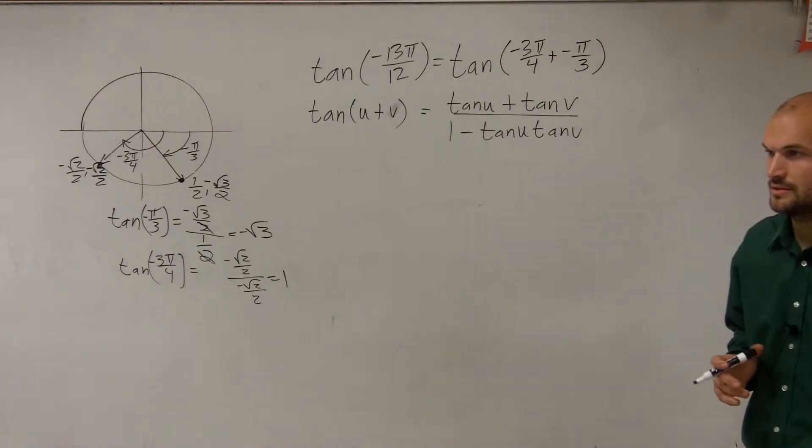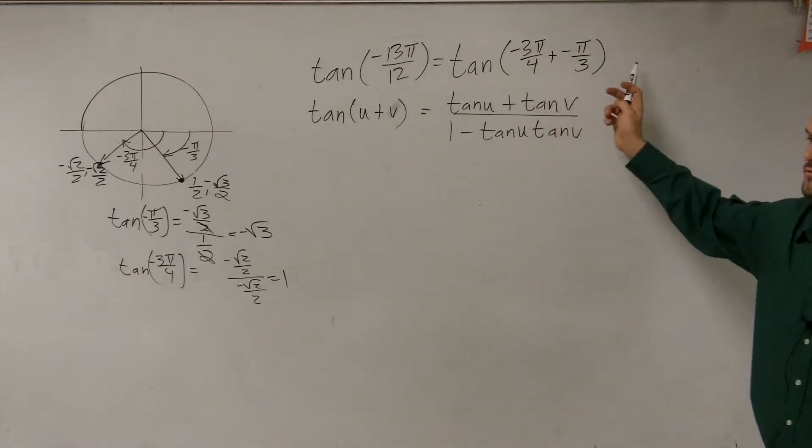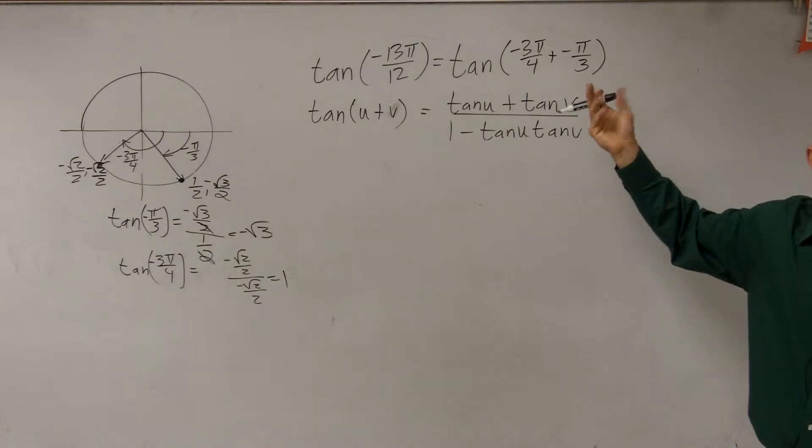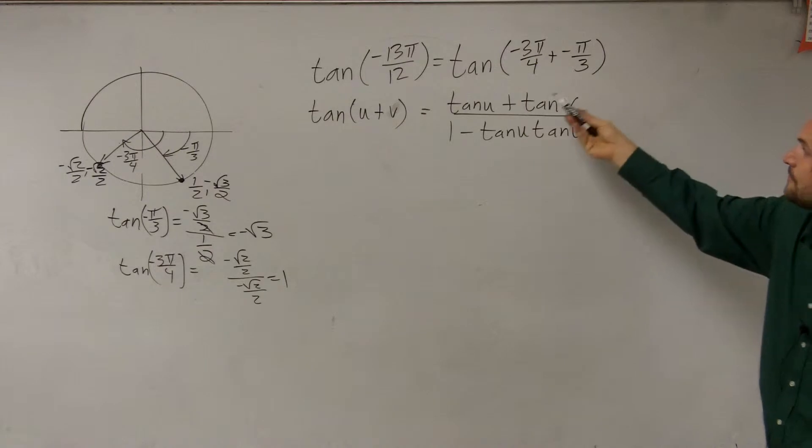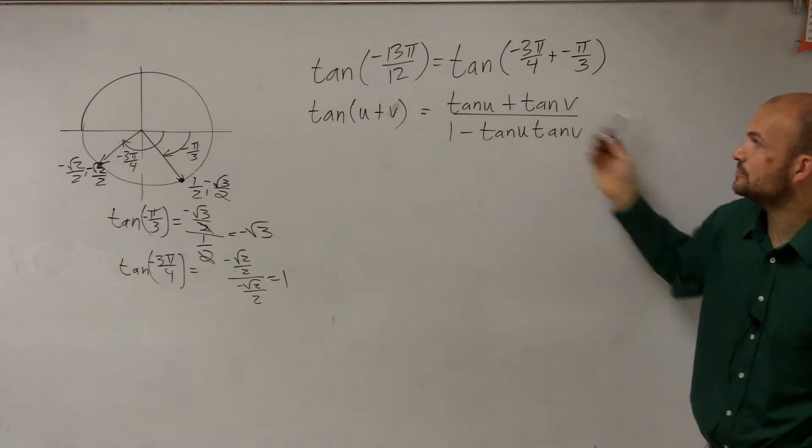Everybody following me so far? I just evaluated my two angles, my two points. I found the tangent for each one - take the y-coordinate over the x-coordinate. So now we have the tangent of my two angles, u and v. I need to determine which one's going to be u and which one will be v.